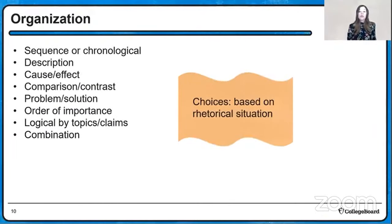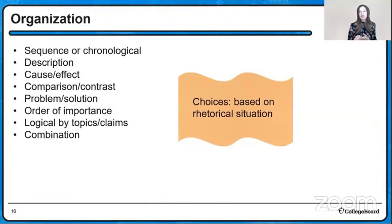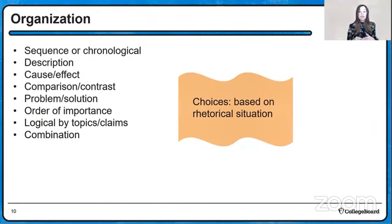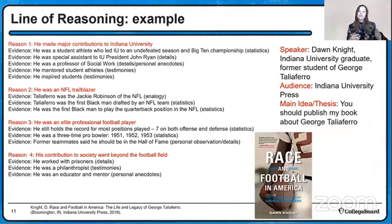We also want to think about how we organize an argument — there are numerous ways depending on the purpose. We can use description, chronological order, order of importance from most to least or vice versa, logical organization by topics and claims, a combination of any of these, or problem-solution. Thinking about what we know about our audience is important in deciding how we want to organize.